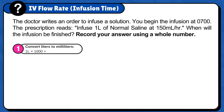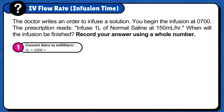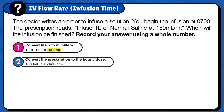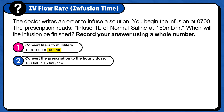1 liter times 1,000 is 1,000 ml. Now, convert the prescription to the hourly dose: 1,000 ml divided by 150 ml per hour. Milliliters cancel out, and the answer is 6.66 hours.